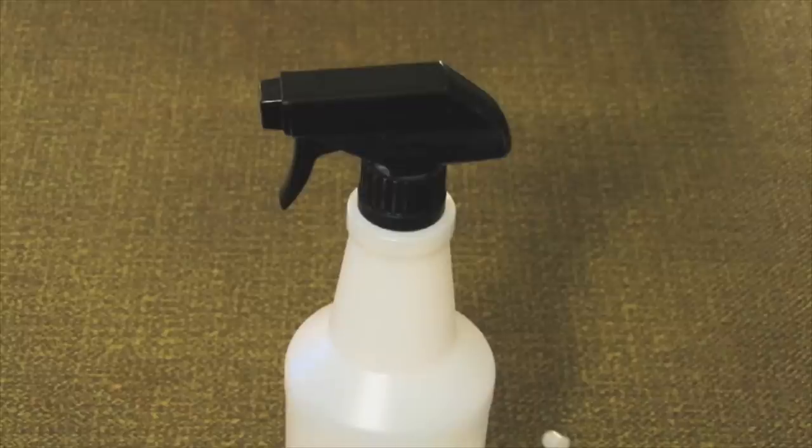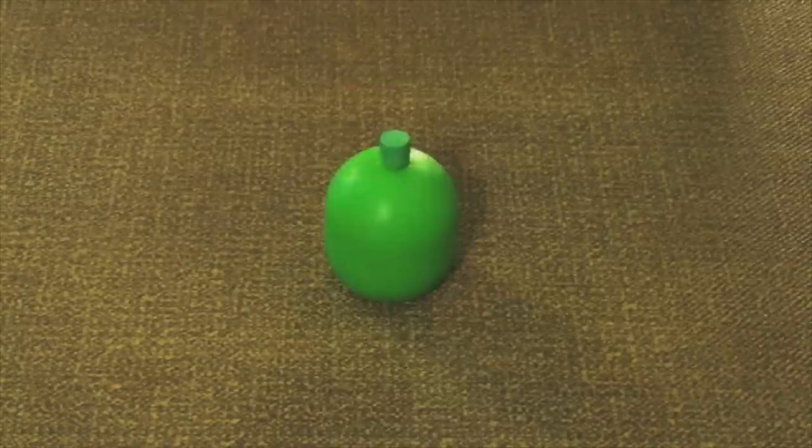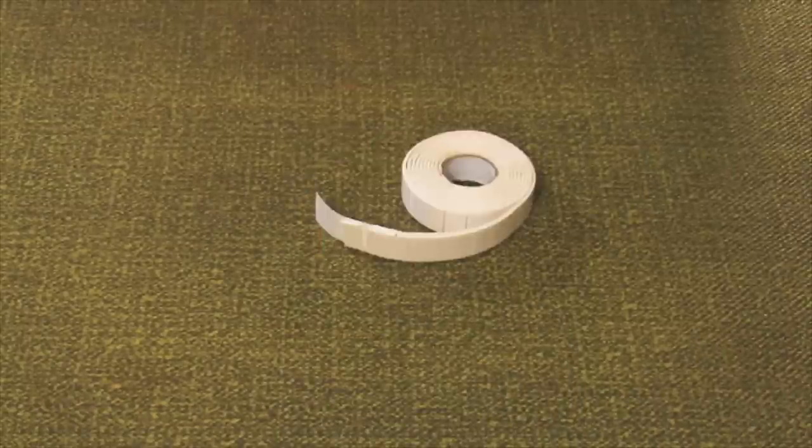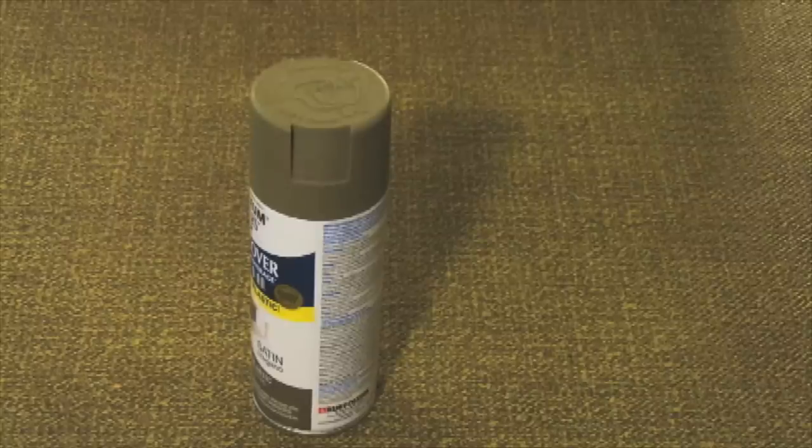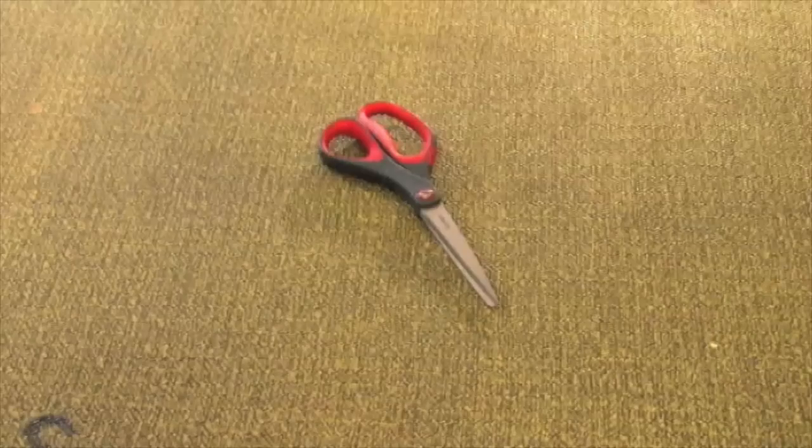Materials for this prop include a squirt bottle, a lemon or lime bottle, adhesive squares, epoxy, army green spray paint, silver spray paint, and scissors.